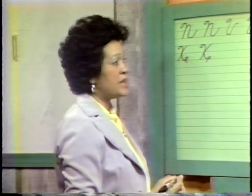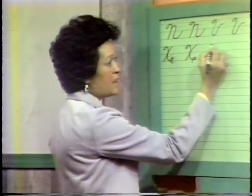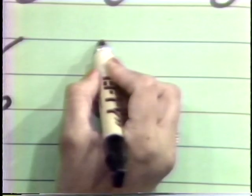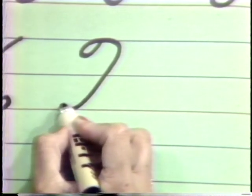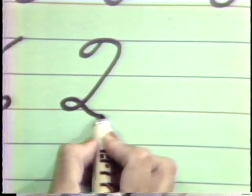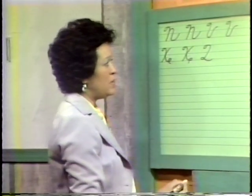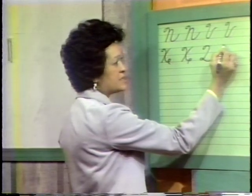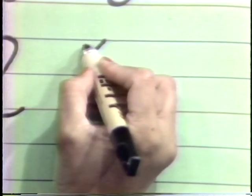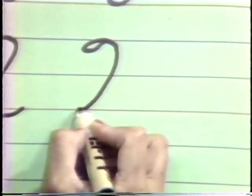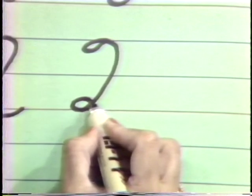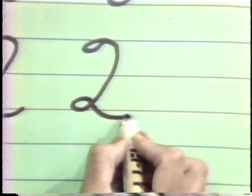The next letter will be Q. Now watch it. We're going to make a slanted vertical loop right at the headline. Come all the way down to your baseline, forming a little loop and go down slightly past the baseline and come back up. Q. Start at your headline with a slanted vertical loop, come all the way to your baseline, forming a loop, closing it there and come back slightly past it and stop.